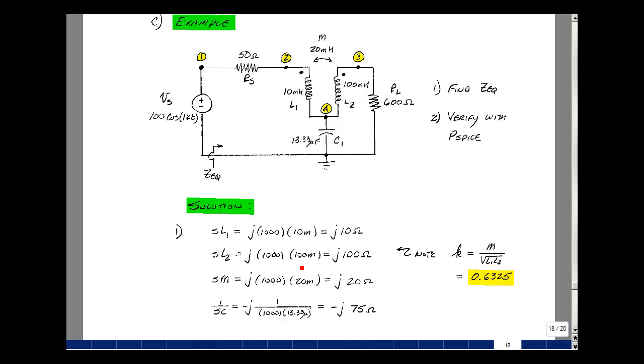L2 is 100 millihenries, so multiply that by 1,000, and I get J 100 ohms. The mutual inductance is 20 millihenries, so multiply that by omega of 1,000, I get J 20 ohms. Minus J over omega C for the capacitor, and that's 1,000 times 13.33 microfarads, and that gives me a minus J 75 ohms.